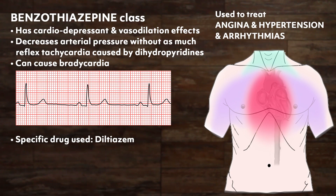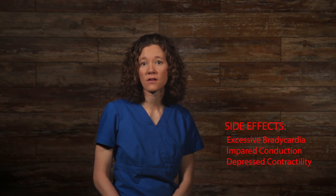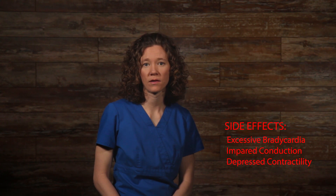Benzothiazepines are another non-dihydropyridine calcium channel blocker with both cardio-depressant and vasodilation effects. They decrease arterial pressure without as much reflex tachycardia as caused by the dihydropyridines, but can also cause bradycardia. The specific drug in this class is diltiazem, which is intermediate between verapamil and the dihydropyridines in its selectivity for vascular calcium channels. Side effects include excessive bradycardia, impaired electrical conduction, and depressed contractility.